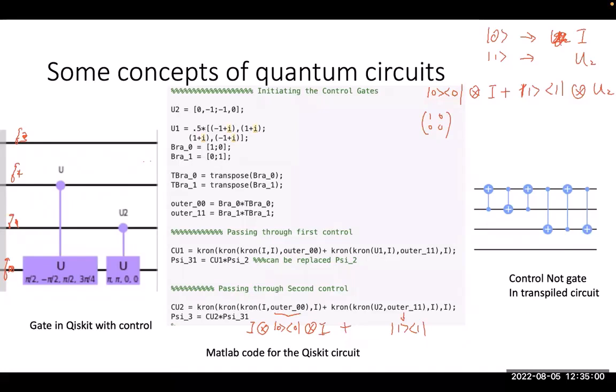This is U2. Tensor product of this one, and then tensor product of I. Do you see that? And then the whole thing, we do the tensor product. So that is the last one. It is zero, the last one.